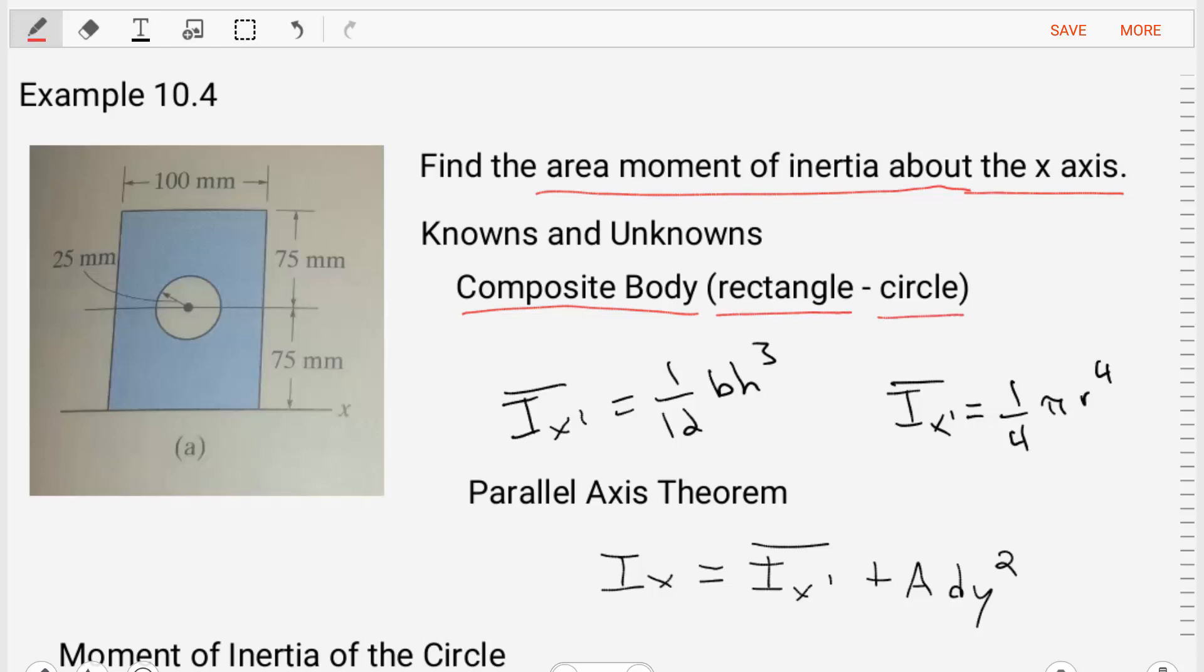And we can look up the equations for the moment of inertia about the centroid of the rectangle and of the circle. So we have them as follows, where the moment of inertia about the centroid x-prime of the rectangle is base times height cubed divided by 12. And then the moment of inertia for the circle is 1/4 times pi times r to the power 4, where r is the radius of the circle.